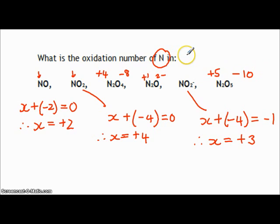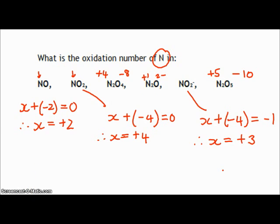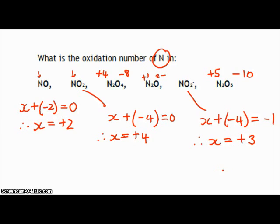Notice how nitrogen can have a variety of different oxidation numbers: starting from the left it was plus two, then plus four, plus four again, plus one, plus three, and plus five. Now that you've got the hang of it, go ahead and pause the video. In your notes, try the next two on that page — one asks for oxidation numbers of manganese in five compounds, and then chromium.